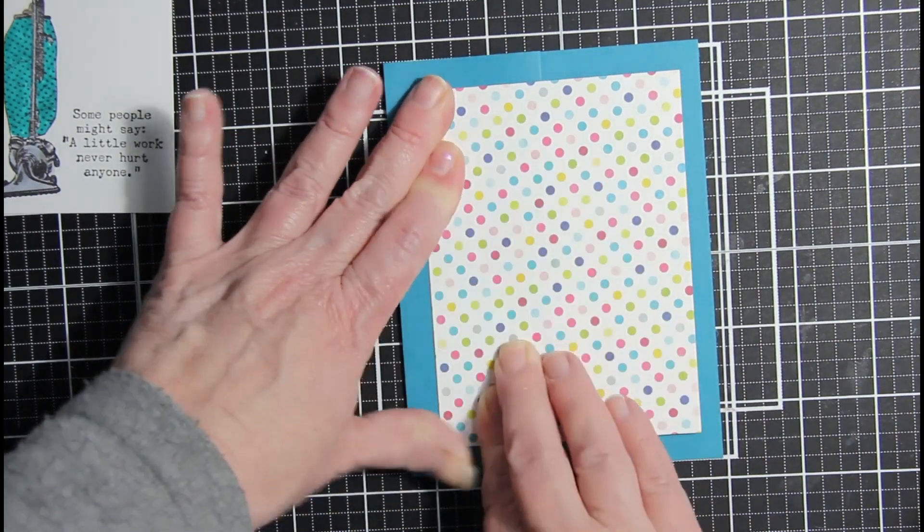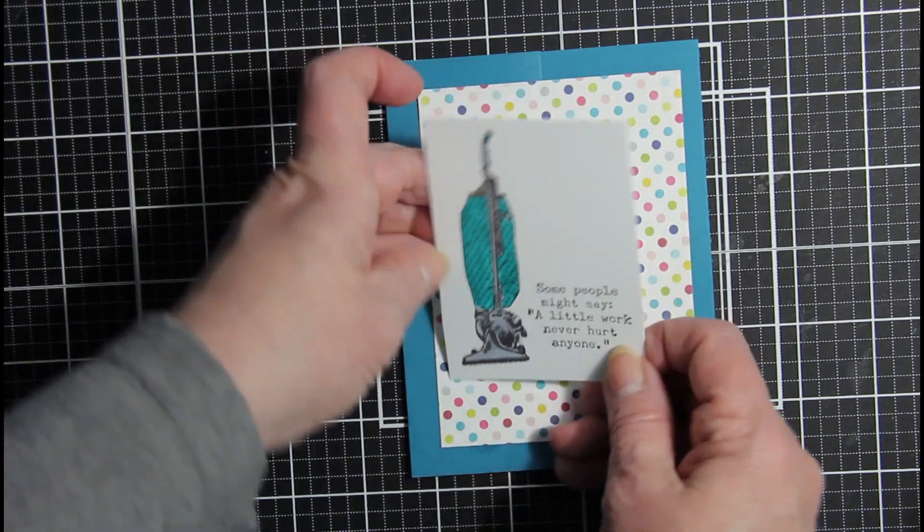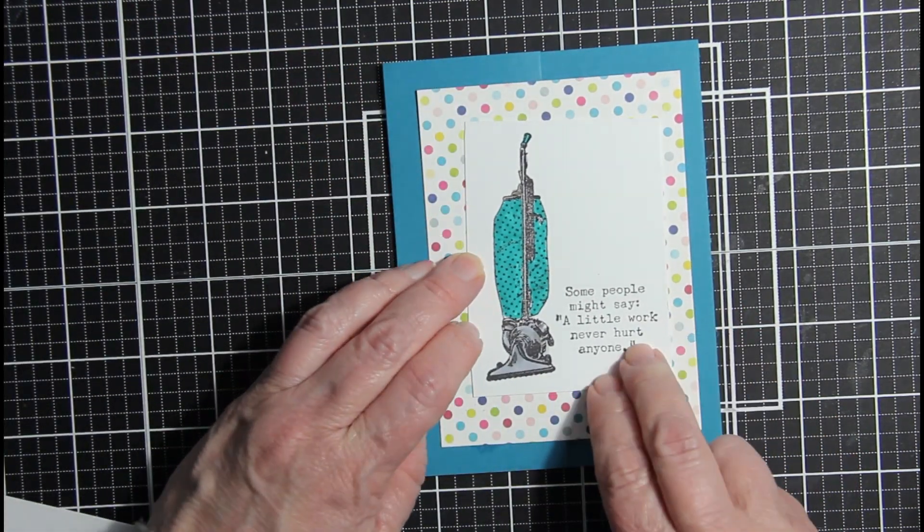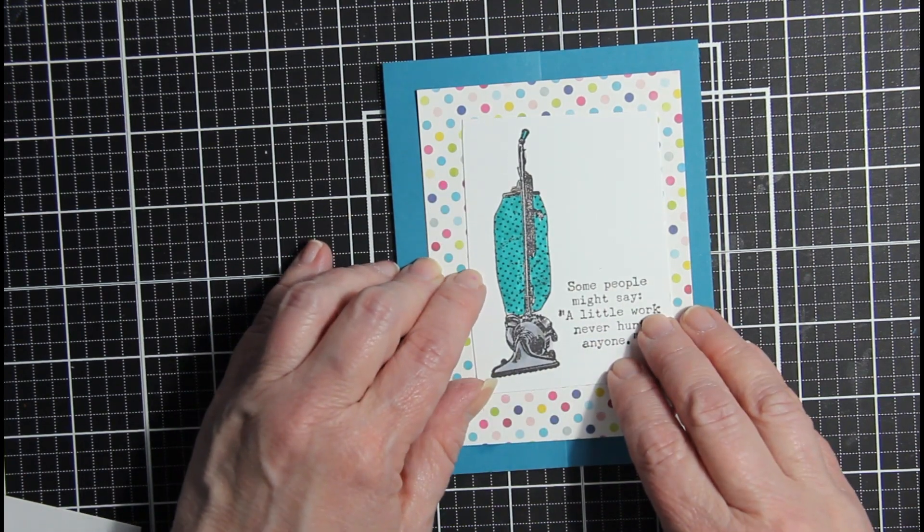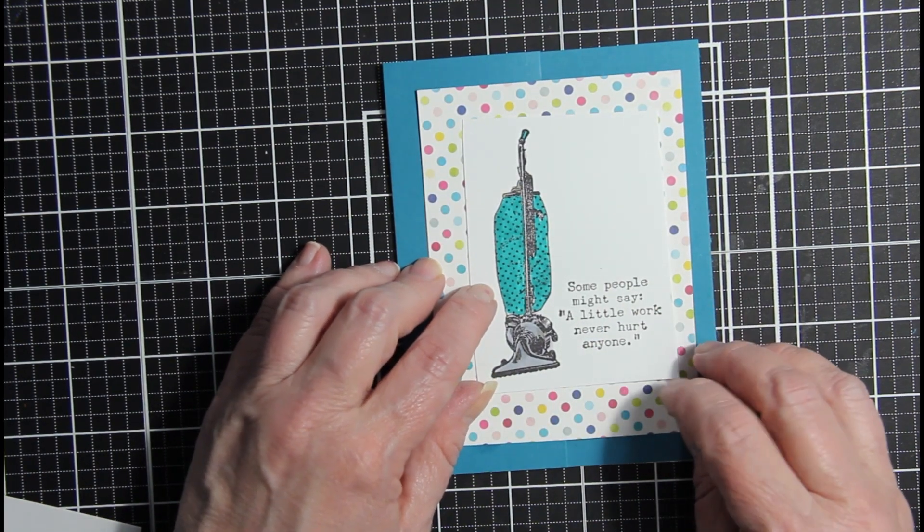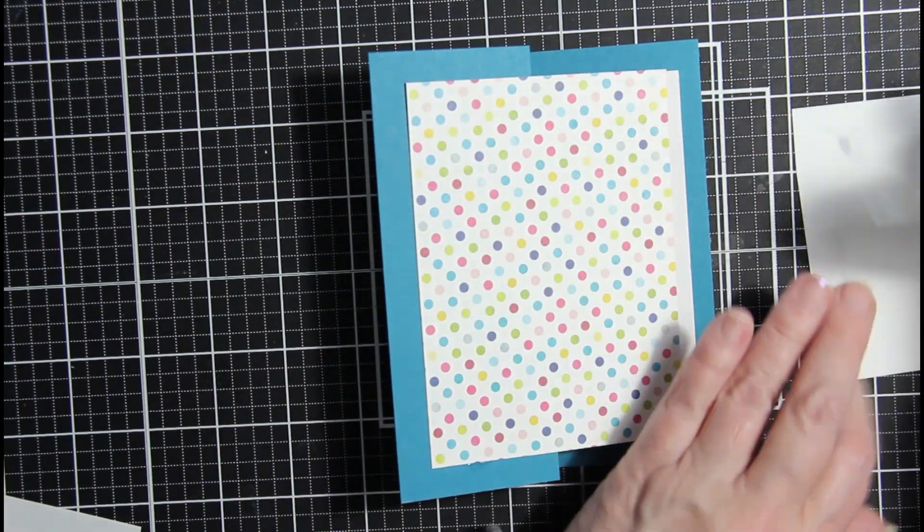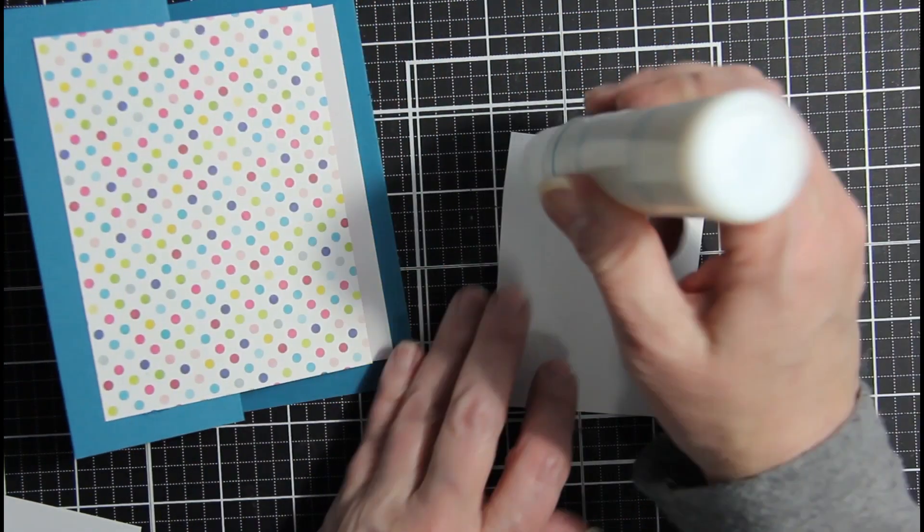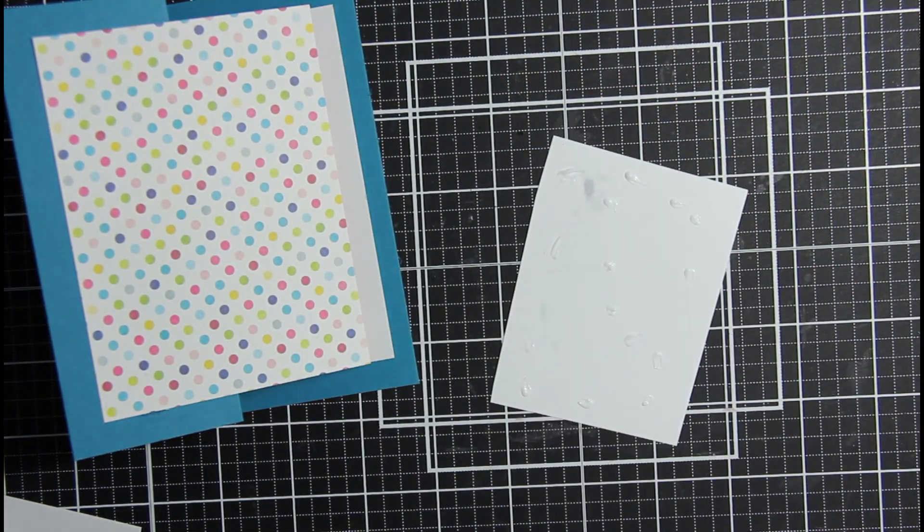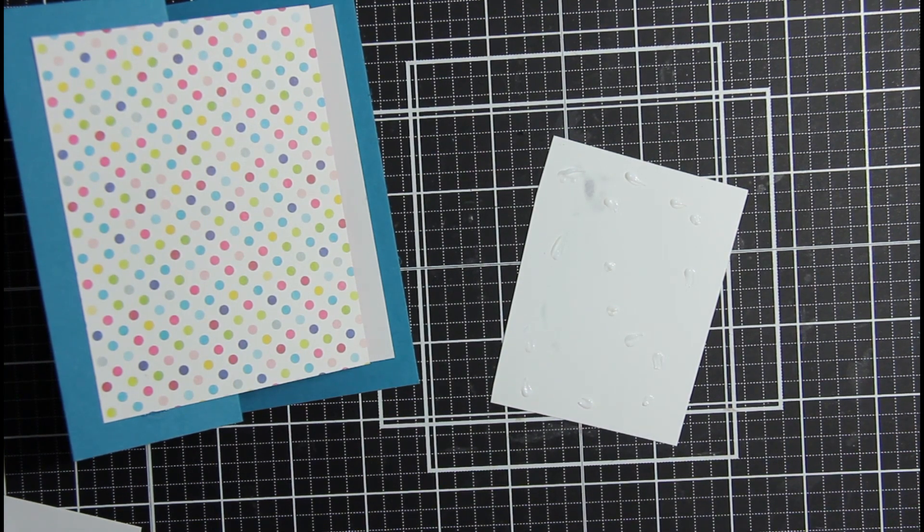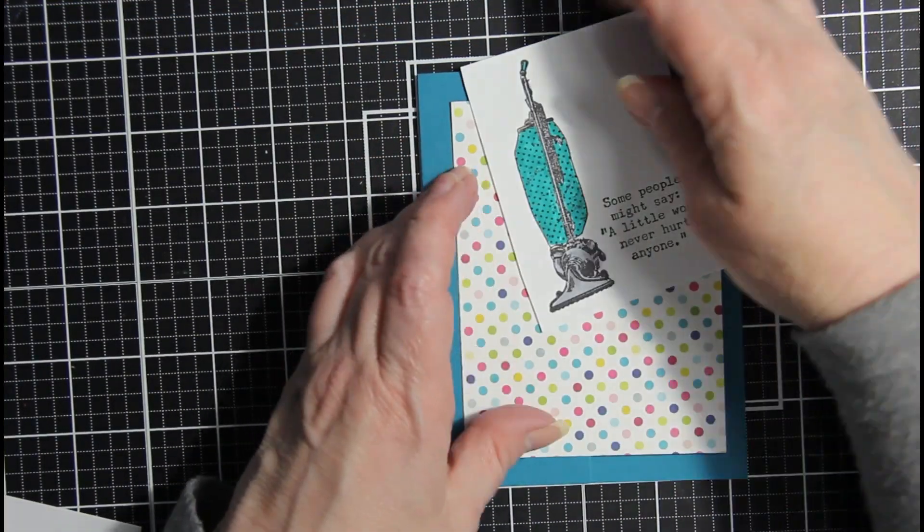So that's already a fun card. You could even just put a sentiment on it. So next, I'm going to put my vacuum cleaner. And I think I'm going to put him in the center. Yeah, I like him in the center. And I love how he picks up those colors. So then I'll just put some glue on him. Flip him over and put him on here.